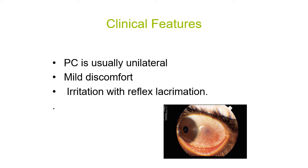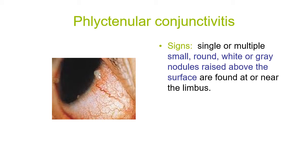There is temporal conjunctival congestion — pinkish-white congestion at the temporal area. You should include in your differential diagnosis all conditions that affect the temporal bulbar conjunctiva and the limbus. The signs include single or multiple small round white or gray nodules raised above the surface at or near the limbus. A vessel can be seen supplying the nodule, which appears white at the limbal area with congestion around it.